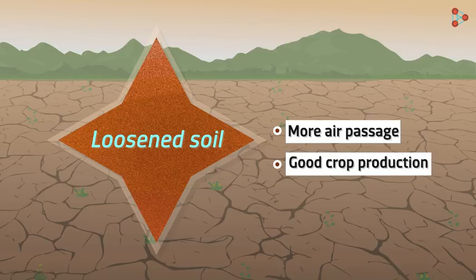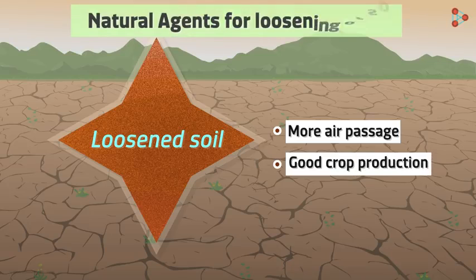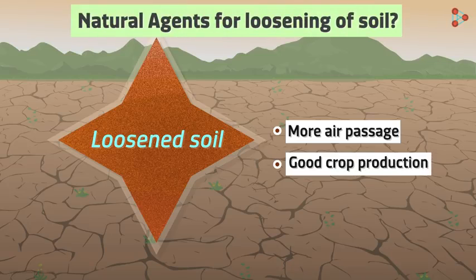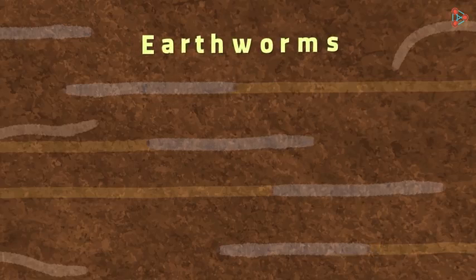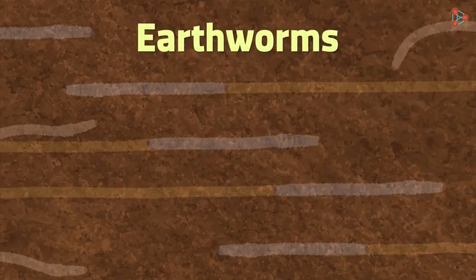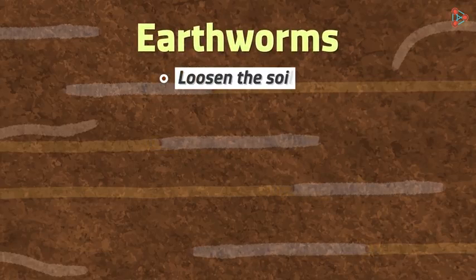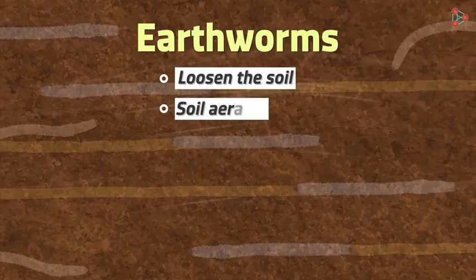Do you know any natural agents that help this process? We usually refer to them as friends of the farmers. Yes, the answer is earthworms. They help loosen the soil and also in soil aeration.